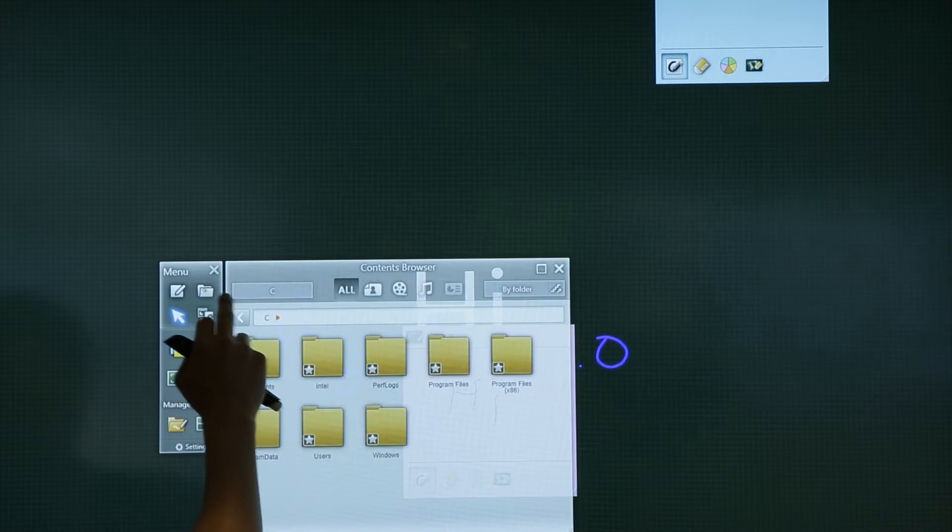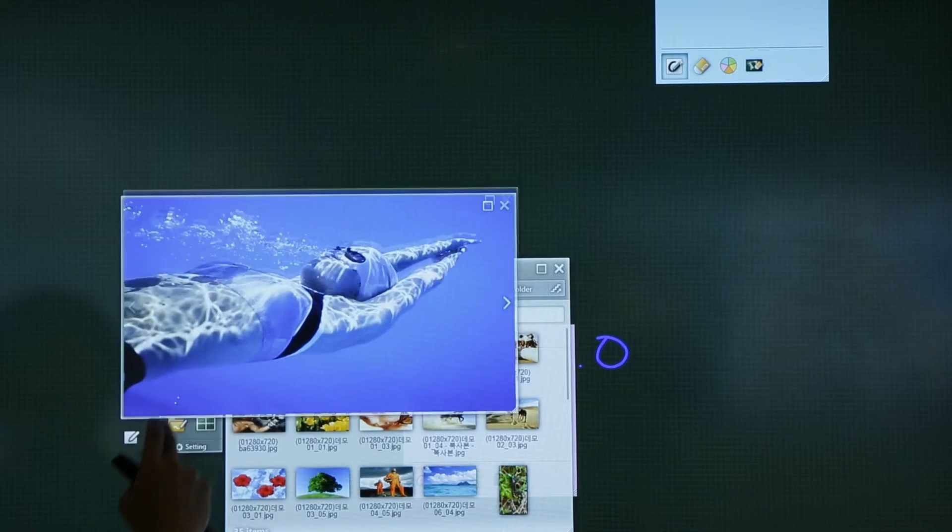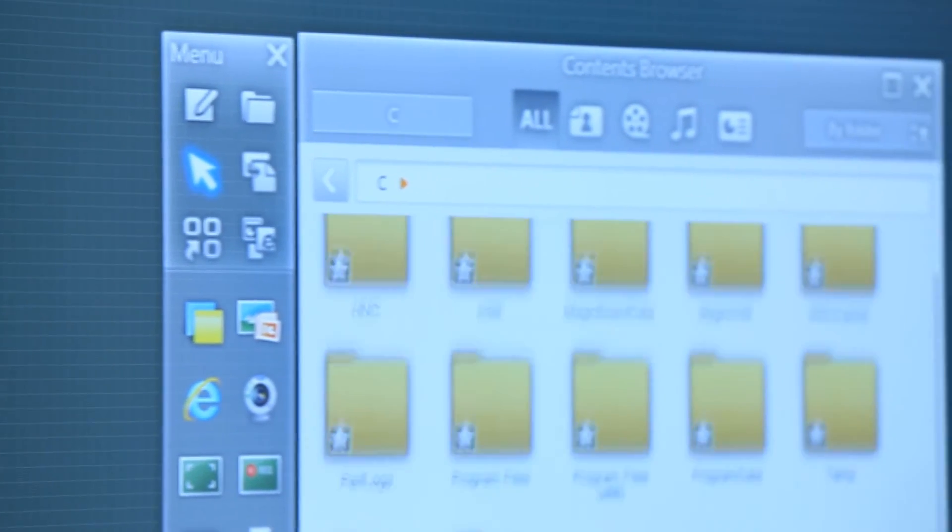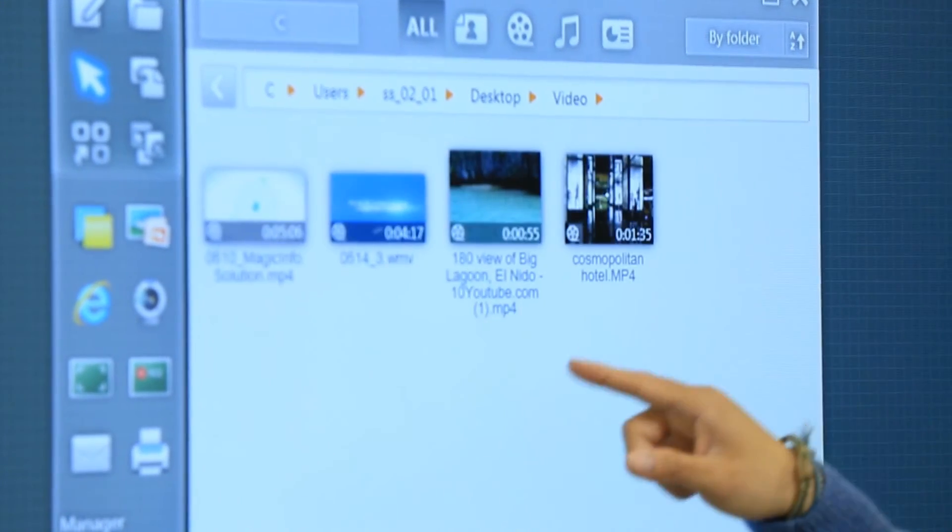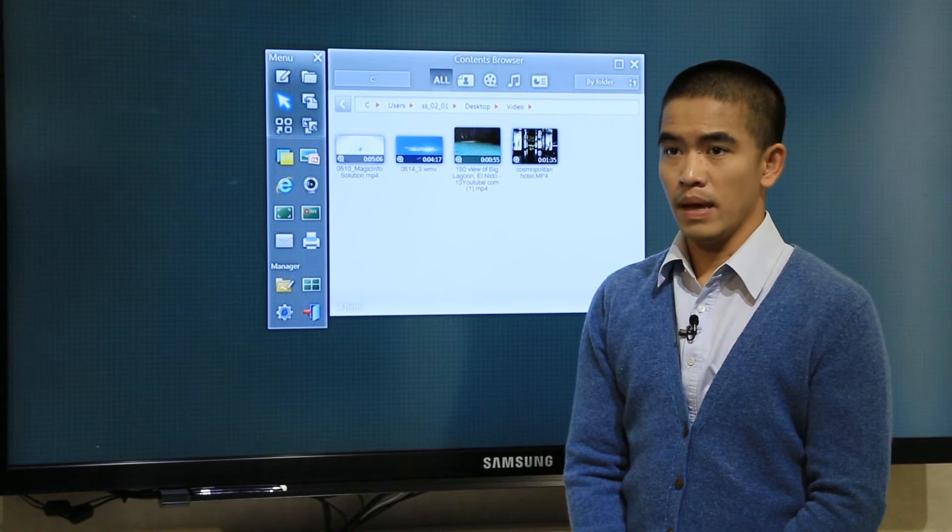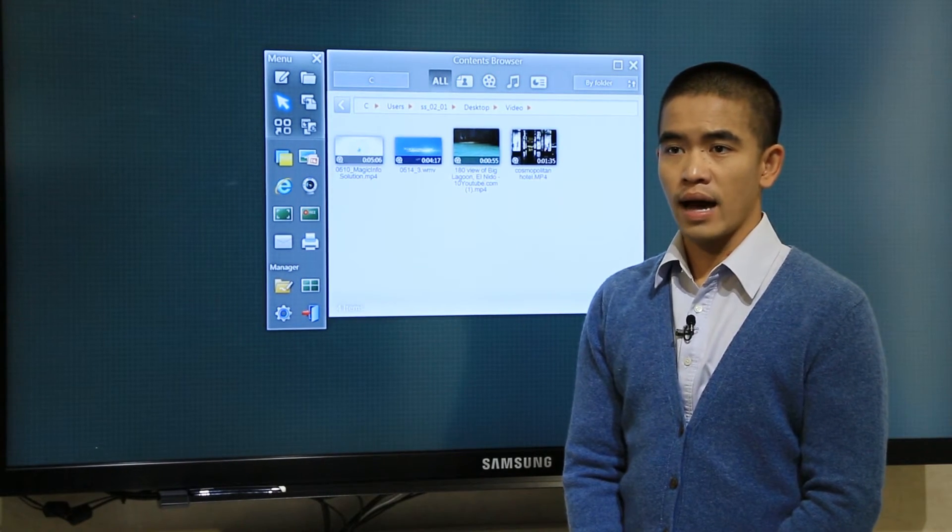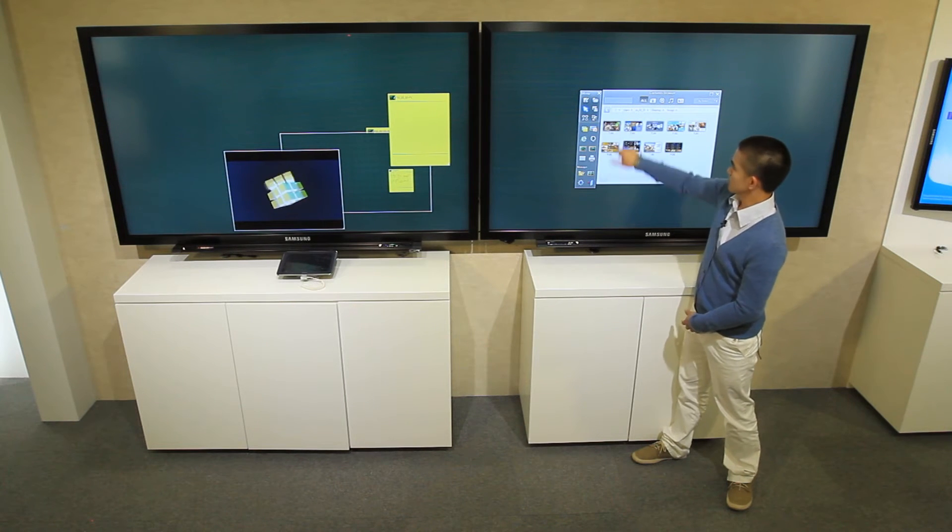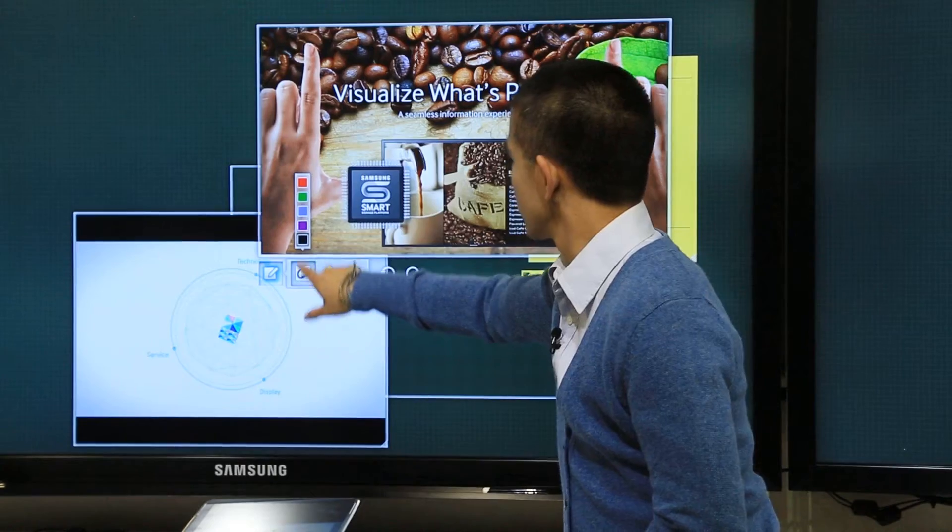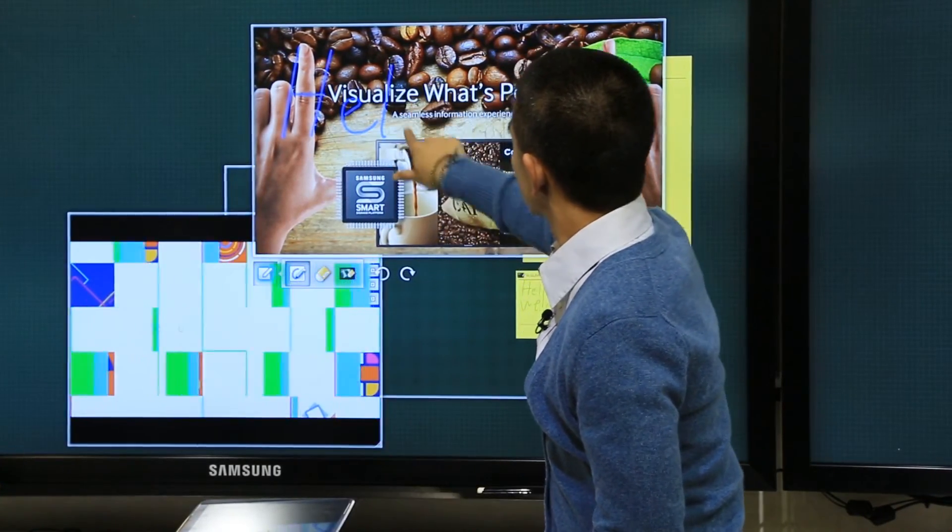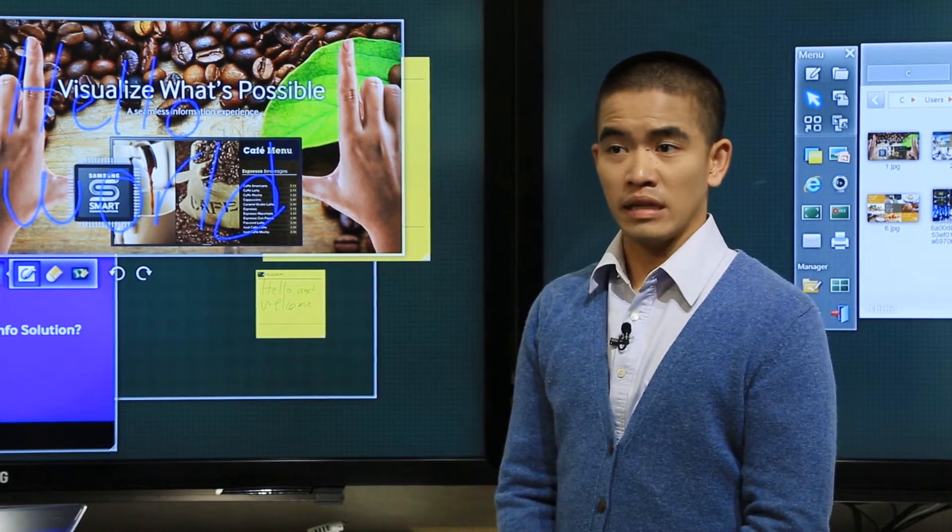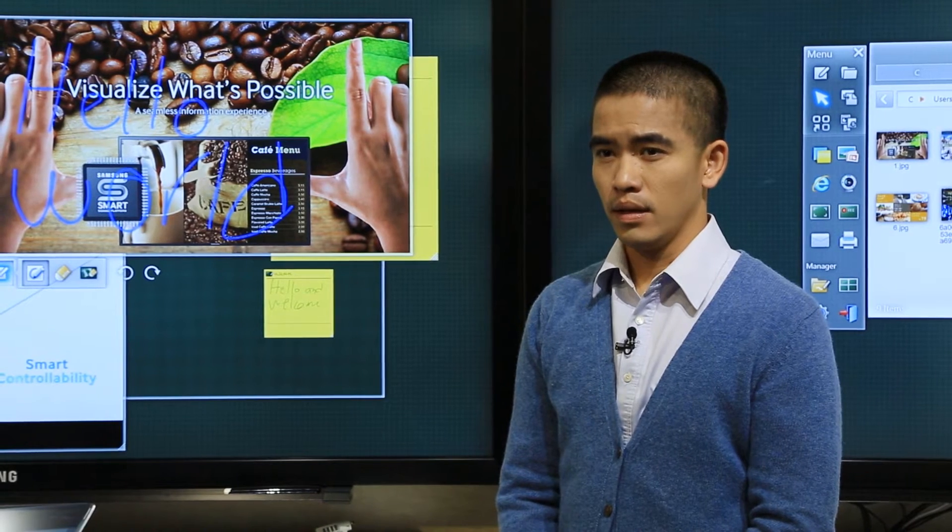The next feature is the content browser. With the content browser users can easily enter to desktop folders. Users can open contents, say images, videos, or audios, and write and highlight on top of them. The benefit of it would be easy access to contents without going back to the desktop. Images and videos can be easily opened and used during the class.